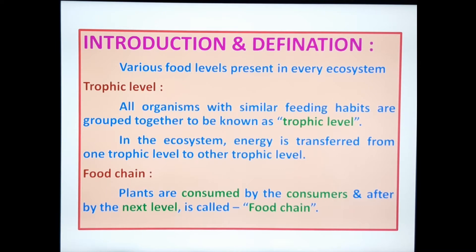Energy is transformed from T1 to T2, T2 to T3, and so on. Food chain means plants are consumed by consumers, and after by the next level — this is called a food chain. Food chain means trophic level.